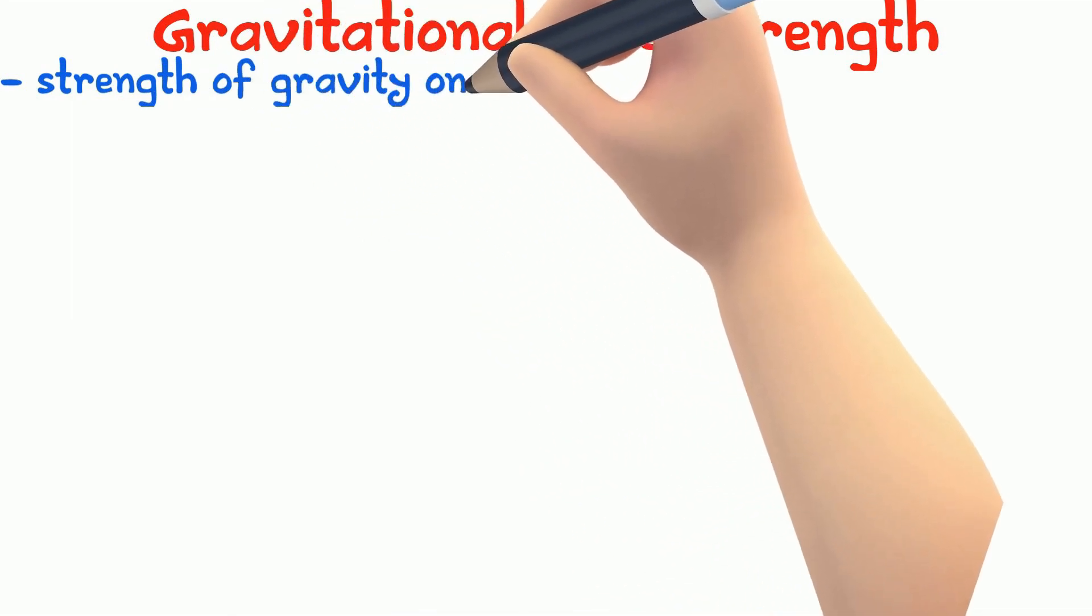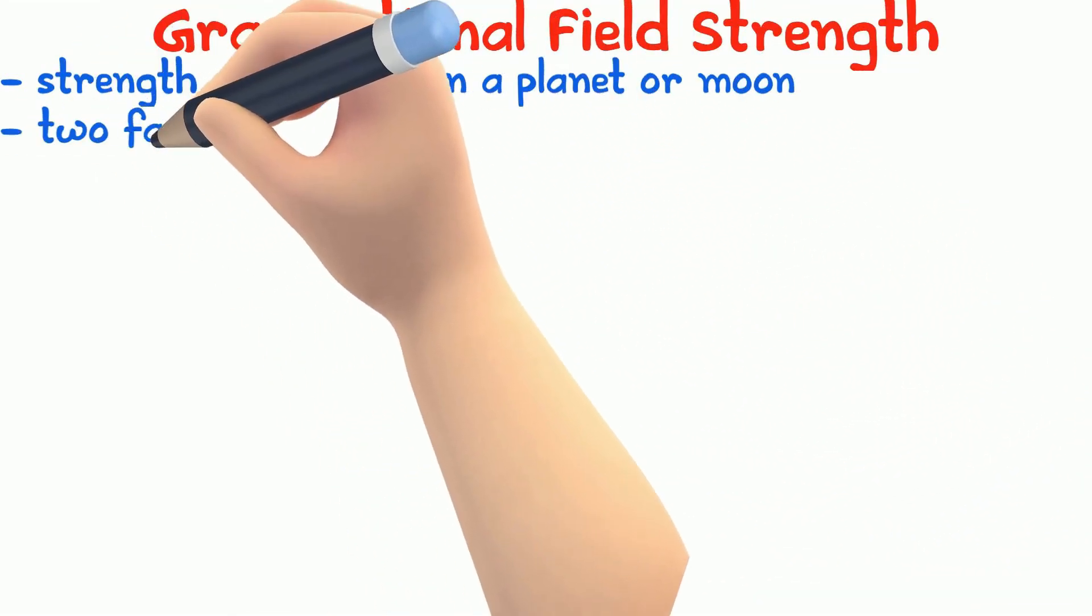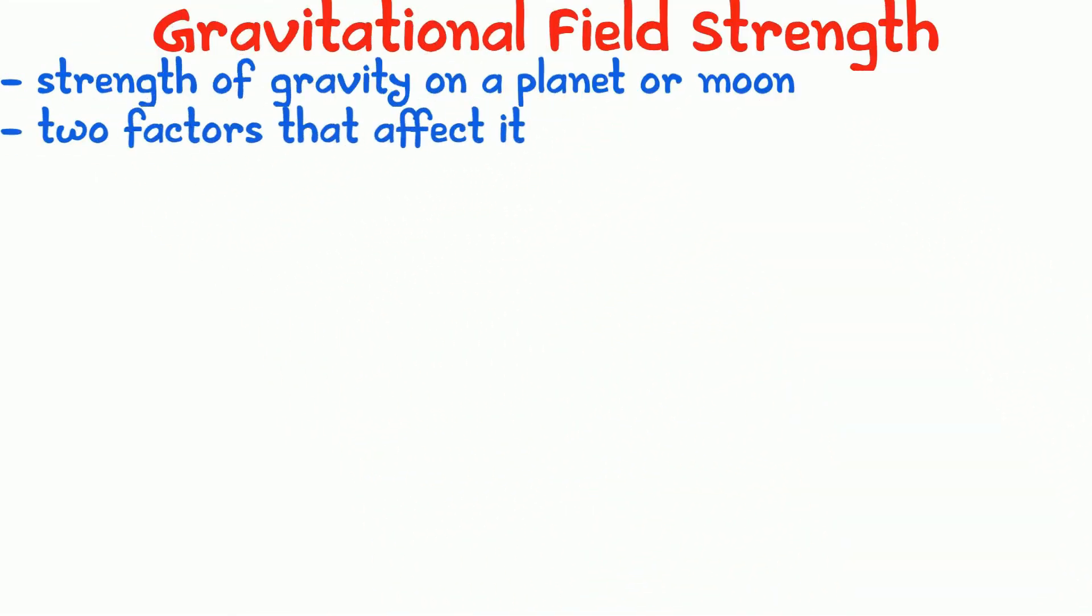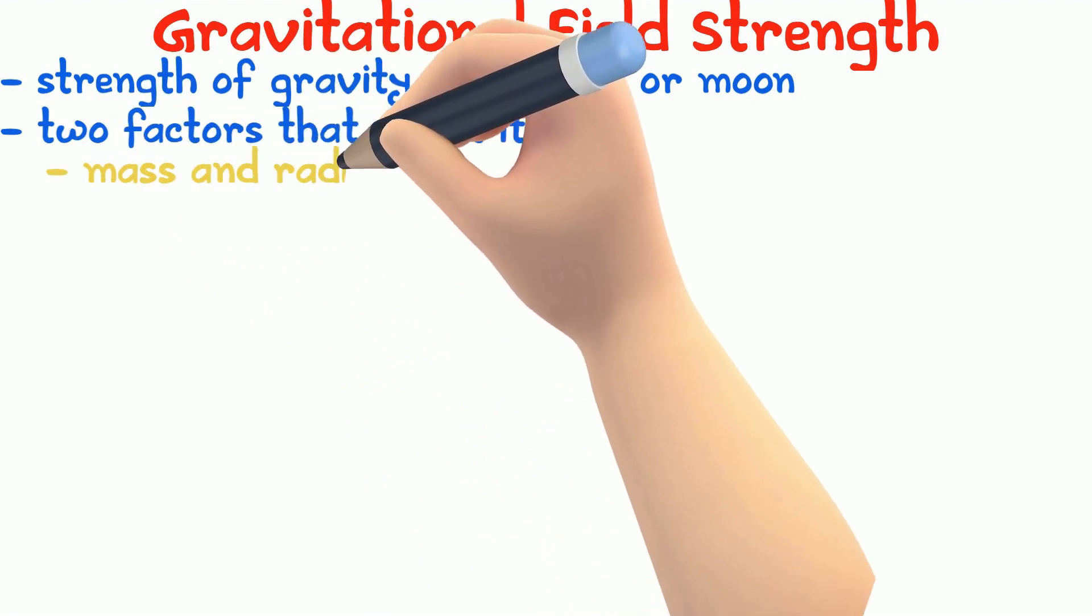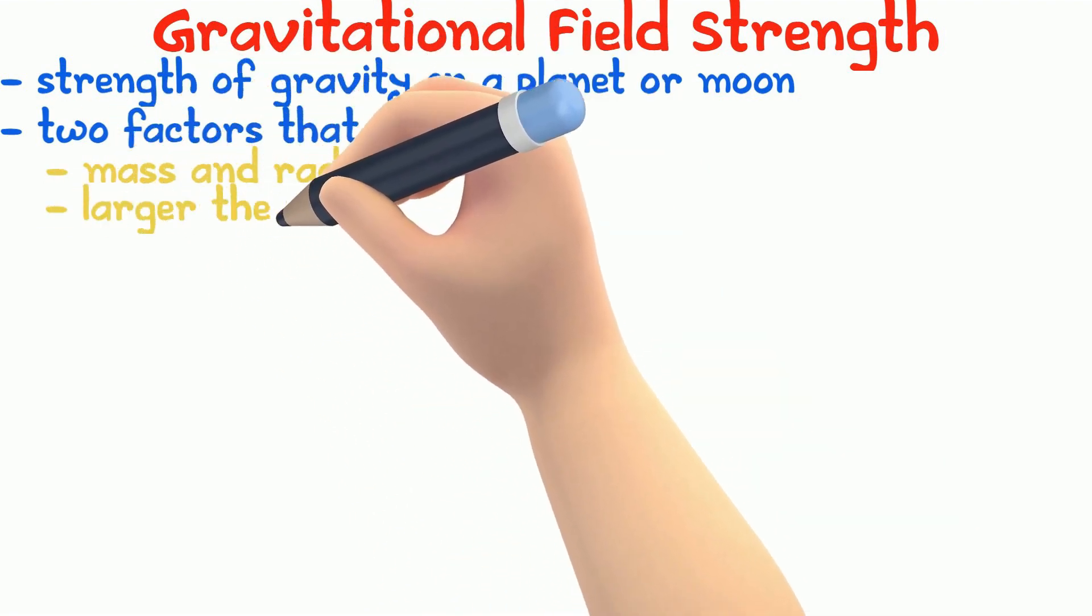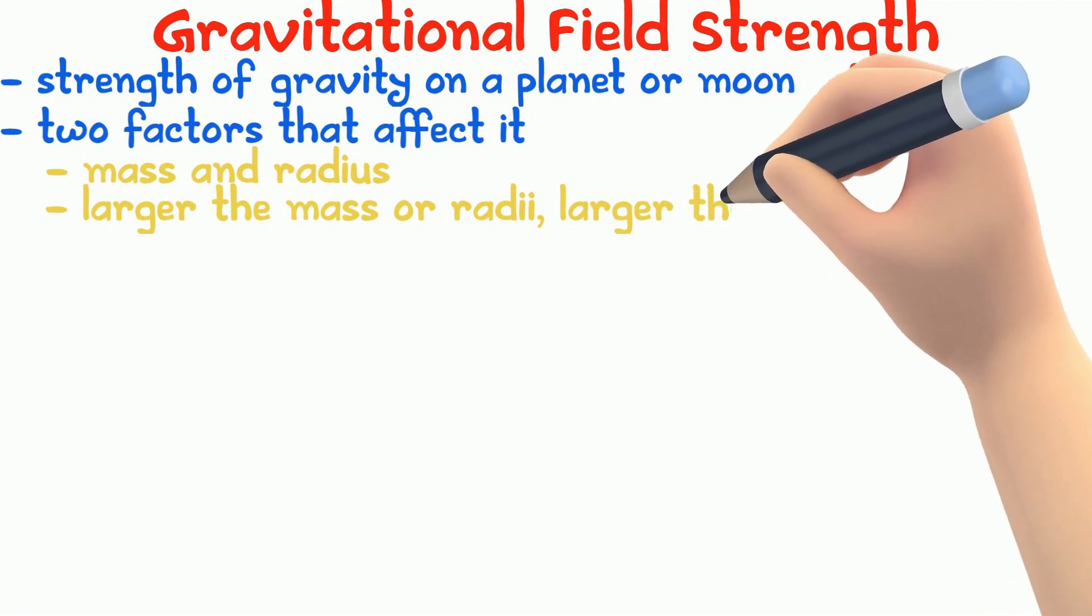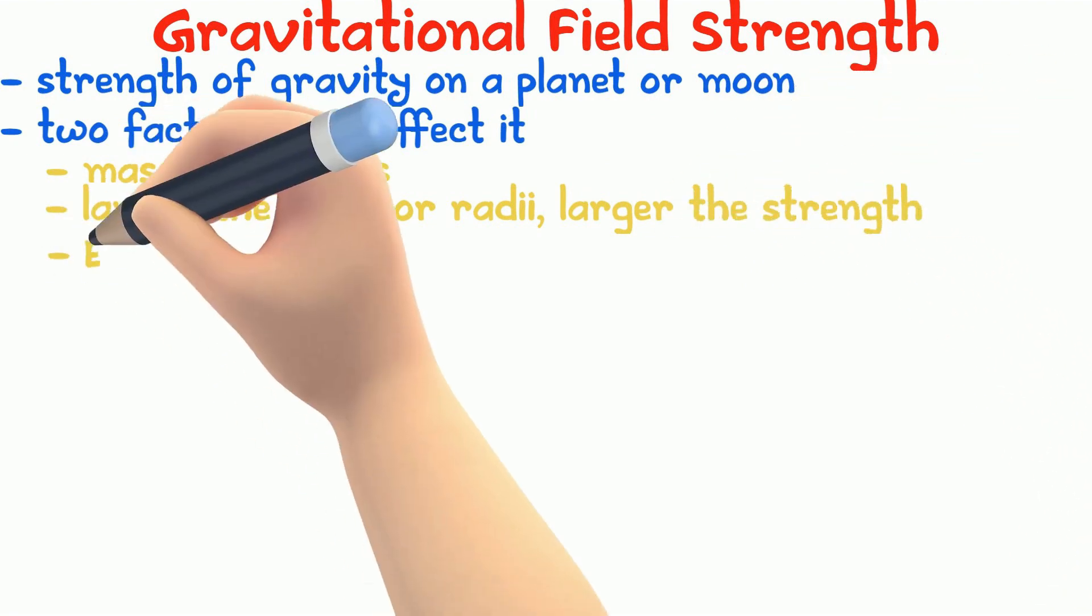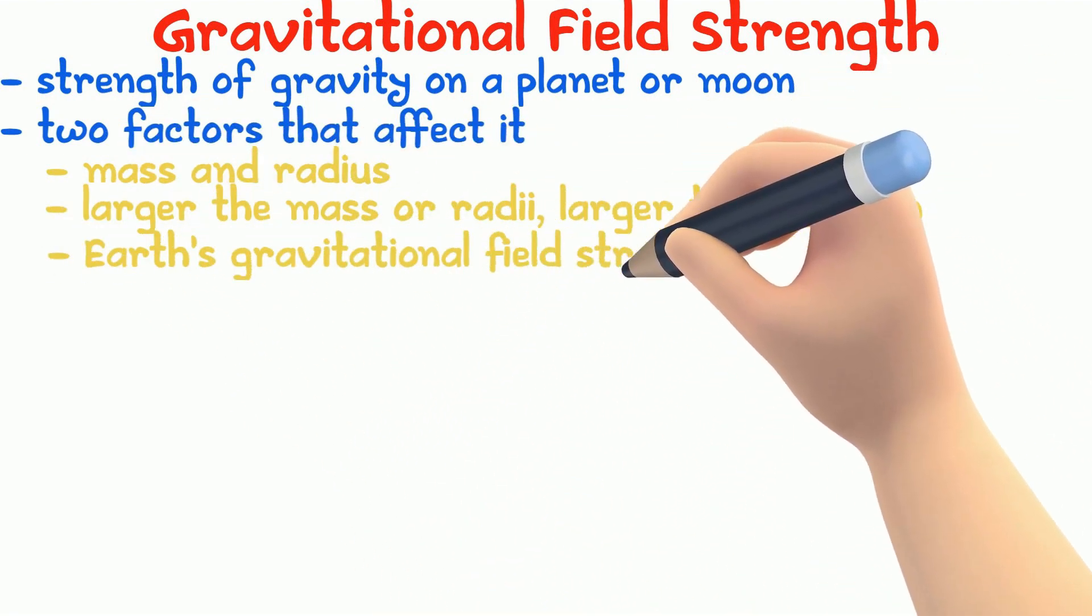The gravitational field strength is the strength of gravity on a planet or moon. There are two factors that affect the gravitational field strength, the mass and the radius. Larger the mass or radii, larger is gravitational field strength. The earth's gravitational field strength is 10 newton per kilogram.